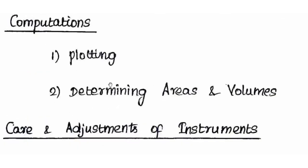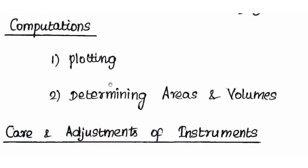We compute values for plotting purposes and for determining areas and volumes. We calculate plans and maps from the field data. For example, we calculate the closing error in a closed traverse — if the end point does not meet the starting point, we calculate the closing error and make corrections.